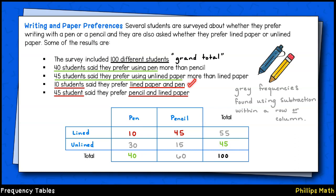We are told 10 students prefer using lined paper with a pen. That's a joint frequency. Two categories apply. So we find the cell representing each of those categories and mark down a 10. Last, we are told 45 students prefer pencil with lined paper. Once again, that's a joint frequency. So we find the cell with both categories and mark down a 45.